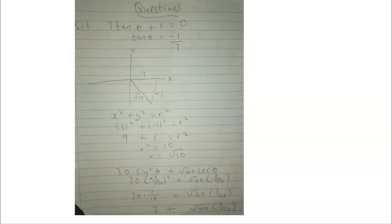I used the theorem of Pythagoras to solve for r, which gave the square root of 10. The question then asked to evaluate 30 sin squared theta plus 40 cos theta. Wherever I see sine I substituted negative 1 over the square root of 10, and wherever I see cosine I substituted 3 over the square root of 10 — since cos is adjacent over hypotenuse — then simplified.